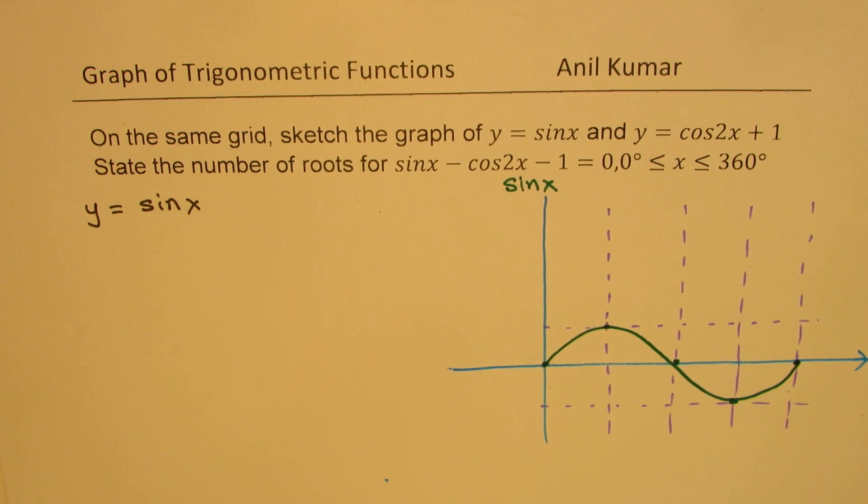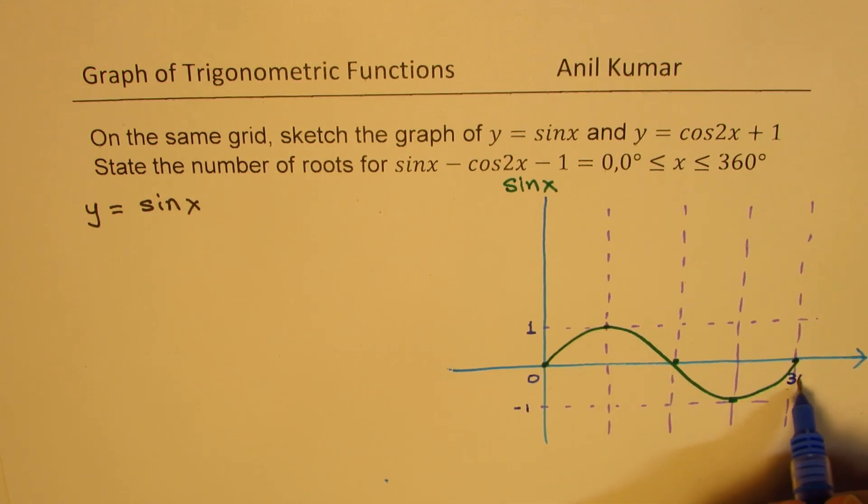And the values, let's write down. Here we have 1, this is minus 1, this is 0 of course. And then that is 360 degrees. Half is 180 degrees, 90 degrees, 270 degrees.